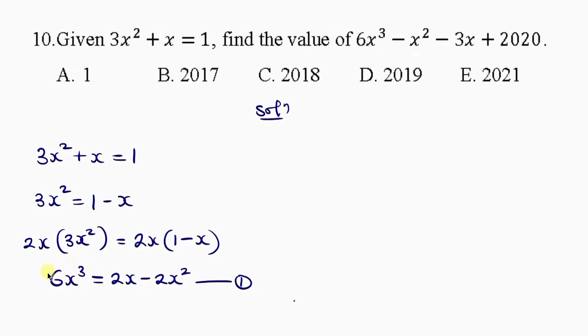Because I'm going to put this 6x cubed into what the question asks us to find. Whenever I see 6x cubed, I'll have to put 2x minus 2x squared, because that's the value of 6x cubed. So in place of 6x cubed, I'm going to put 2x minus 2x squared. Then minus x squared minus 3x plus 2020.